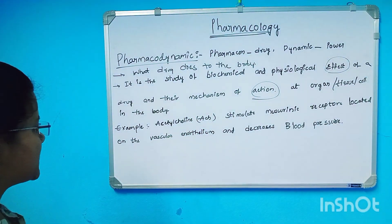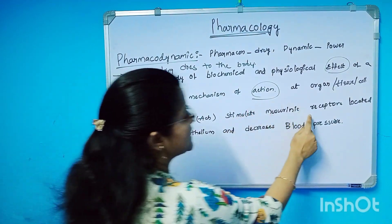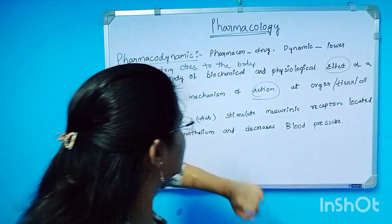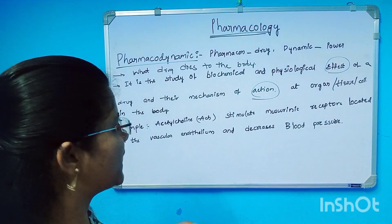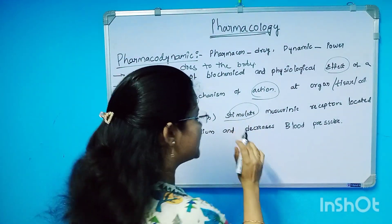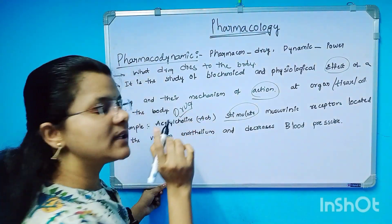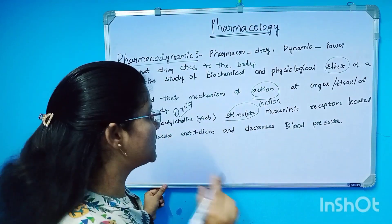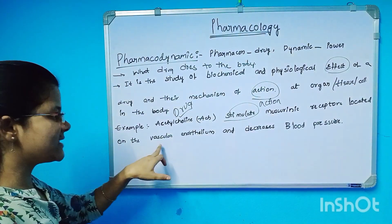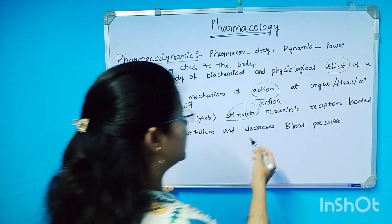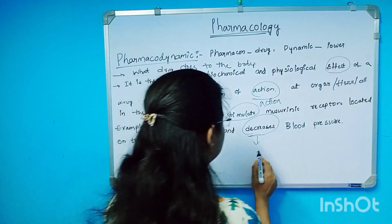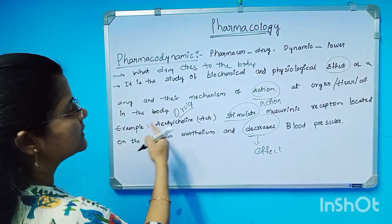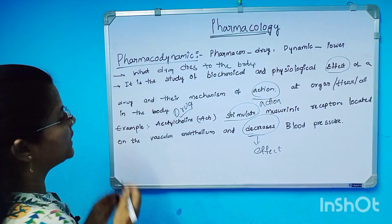For example, let me explain. Acetylcholine is a drug that is stimulating. It is stimulating the muscarinic receptor that is located on the vascular endothelium and decreases blood pressure. So this decrease effect — the decrease in blood pressure — is the drug action and effect. That is called Pharmacodynamics.